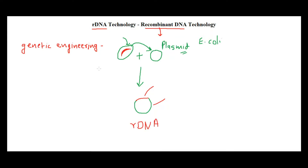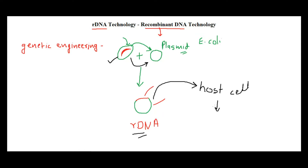So in recombinant DNA technology, we isolate the gene of interest, then insert it into the vector to get the recombinant DNA. This recombinant DNA then has to be multiplied, so we transform it into a suitable host cell — a suitable organism — where it will multiply and produce the product coded by the gene of interest, such as insulin.